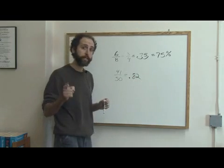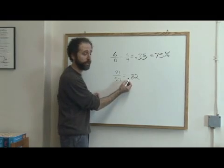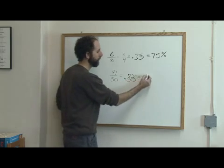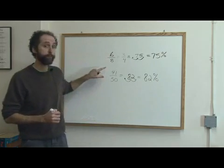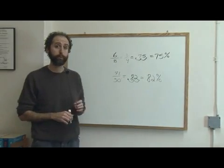That's a decimal. To turn that decimal into a percent, you move the decimal spot over two places. So .82 becomes 82 percent. If your quiz grade was 41 out of 50, your test grade or your percentage is 82 percent.